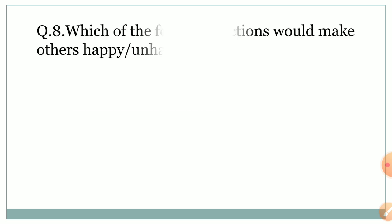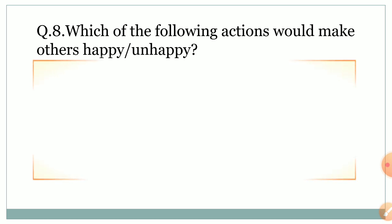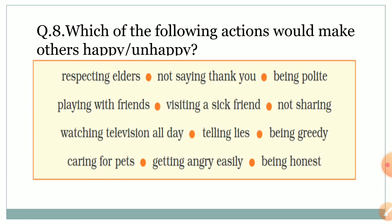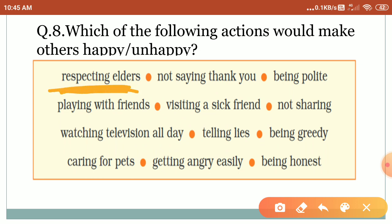The next question is: which of the following actions would make others happy or unhappy — 'kaunse actions jo hain wo dousarun ko happy ya unhappy karate hain.' There are some actions given in the box. First is respecting elders — 'badao ka aadar karna.' Not saying thank you — 'dousarun ko thank you nahi bolna.' Respecting others makes others happy. Being polite — 'aram se achse se baat karna' — this also makes others happy.